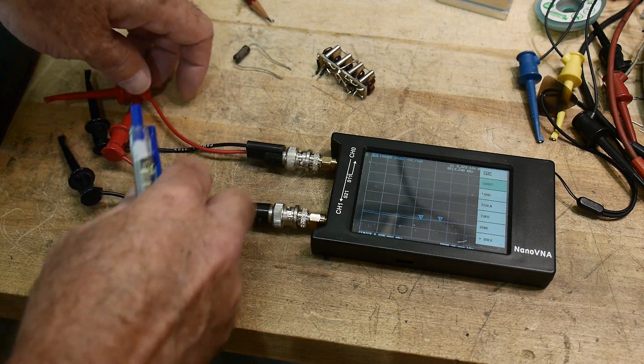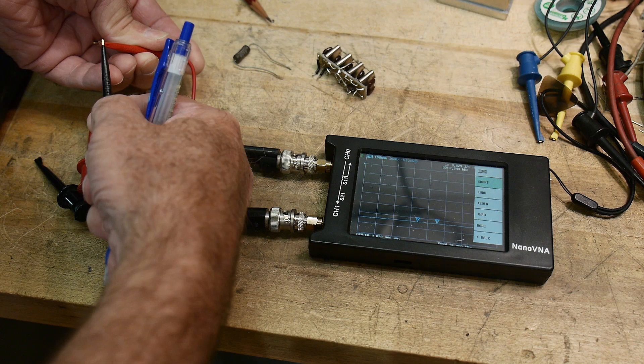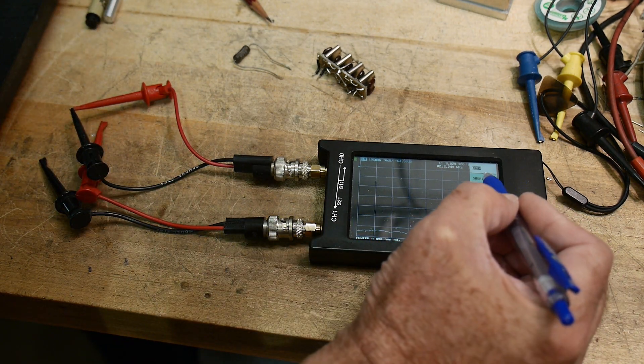Now it says short. So I'm going to take channel zero. Channel zero is the one we need to short. And I'm going to put those two clip leads on each other. So now they're shorted. Say short.